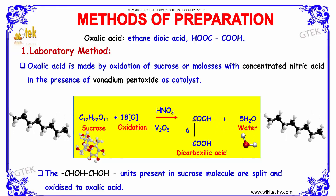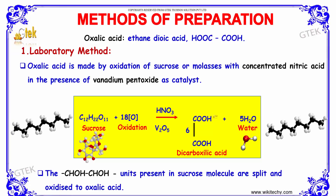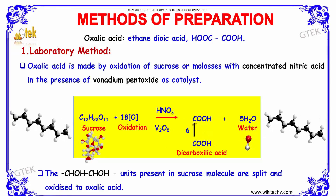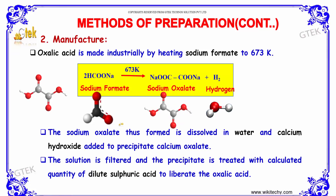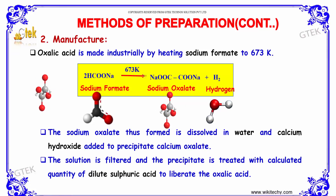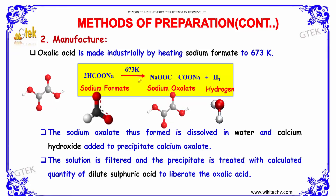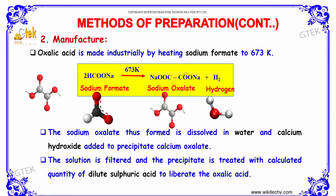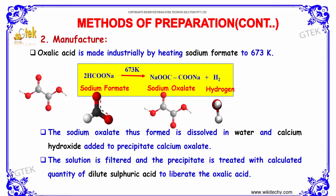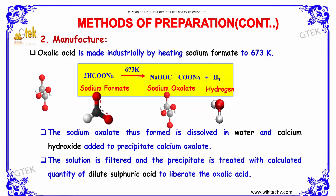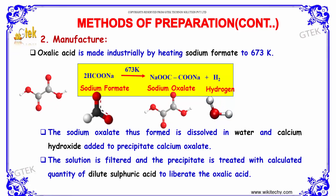The units present in sucrose molecules are split and oxidized to oxalic acid. Industrially, oxalic acid is made by heating sodium formate to 673 Kelvin. Sodium formate on decomposing forms sodium oxalate and hydrogen. This sodium oxalate is dissolved in water and calcium hydroxide is added to precipitate calcium oxalate. The solution is filtered and the precipitate is treated with a calculated amount of dilute sulfuric acid to liberate the oxalic acid.